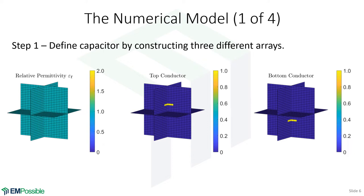The numerical model starts by defining three arrays in memory. The first array represents all of the space around and in the capacitor, with each point assigned the relative permittivity — in this example, all ones for air. The next two arrays define the top and bottom conductors, filled with zeros but with ones placed where the metals go. Viewed from the top, the metal fills out a square. With these three arrays, the simulation understands everything about the capacitor: the plate size, separation, and dielectric constant both inside and outside.